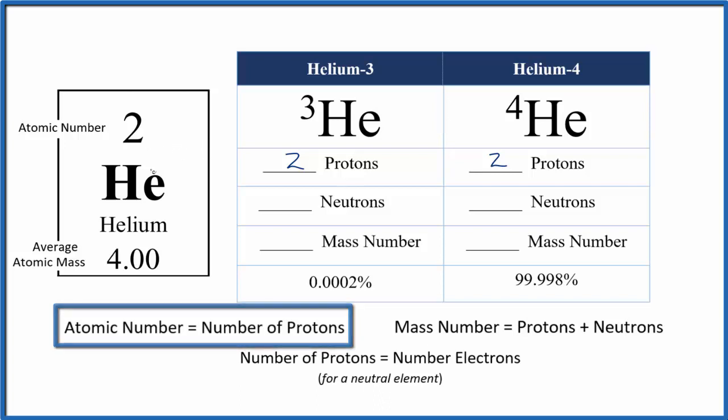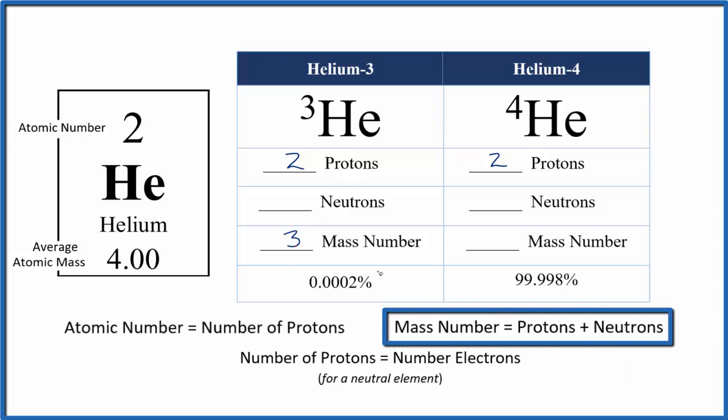Of helium, or helium 3, the 3 in the name tells us the mass number. So we have a mass number of 3 for helium 3, and the mass number is protons plus neutrons.